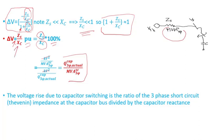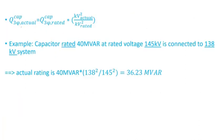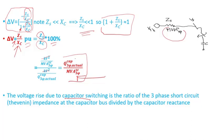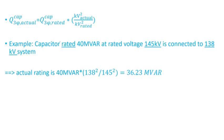So this formulation applies whether you want it in impedance form or in MVA, MegaVar, KVar, or KVA. The voltage rise due to capacitor bank switching is the ratio of the three-phase short circuit Thevenin impedance at the capacitor bus divided by the capacitor reactance, or equivalently the actual three-phase rating of the capacitor bank divided by the three-phase short circuit MVA. The actual rating of the capacitor bank equals the rated value from the manufacturer times the actual system voltage divided by the rated voltage of the capacitor bank — all squared.